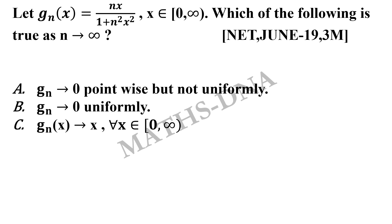(c) g_n(x) tends to x for all x belongs to closed 0 open infinity, and (d) g_n(x) tends to x upon 1 plus x square for all x belongs to closed 0 open infinity.